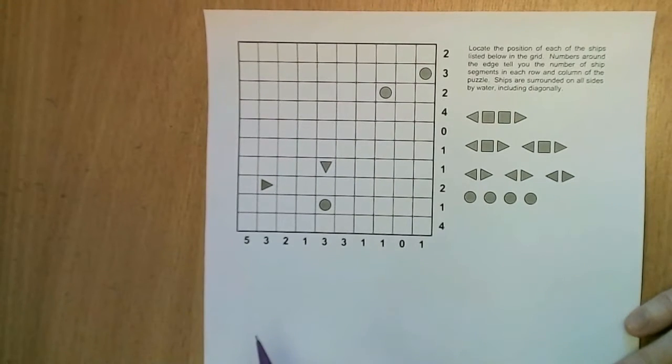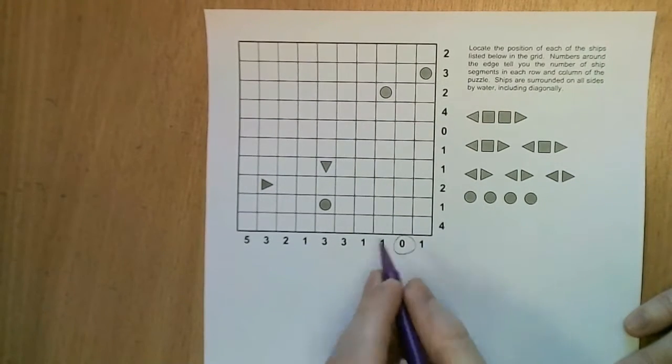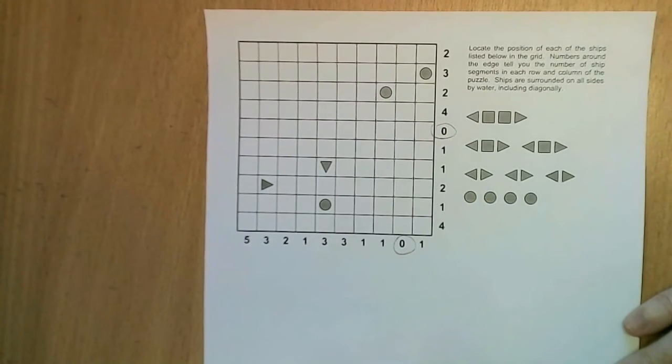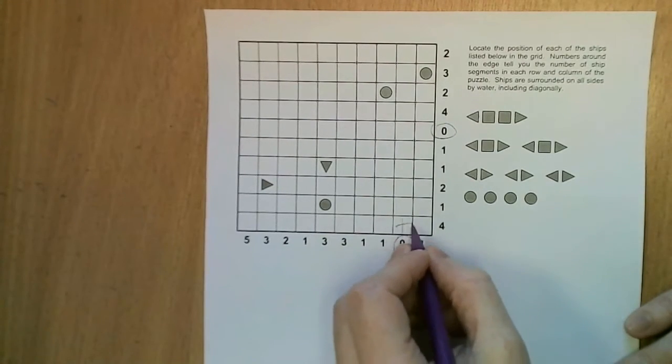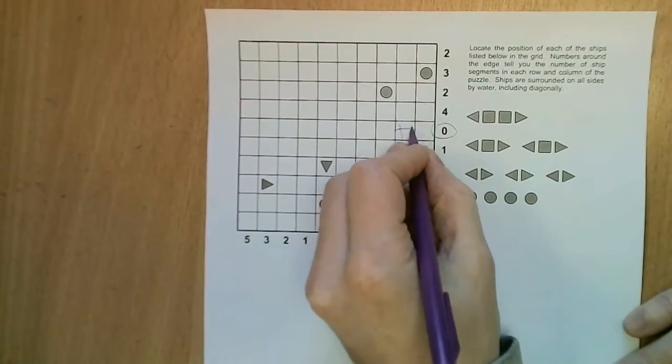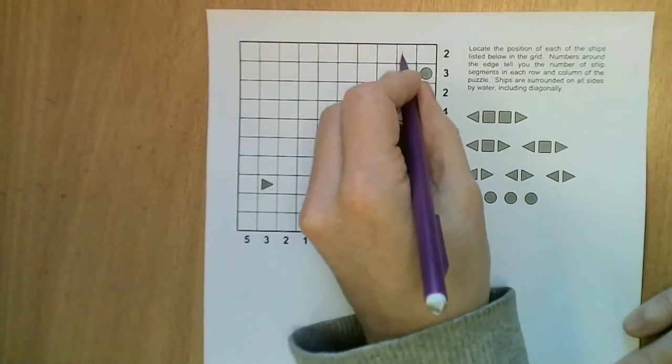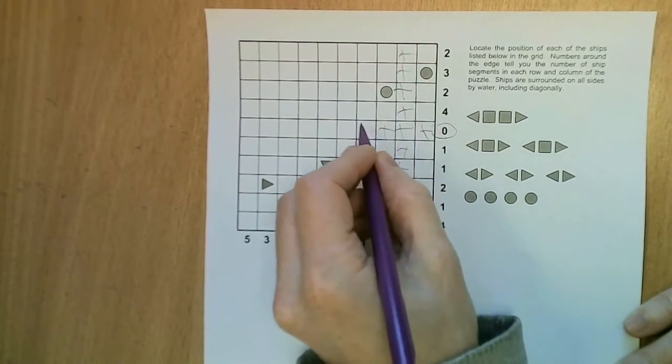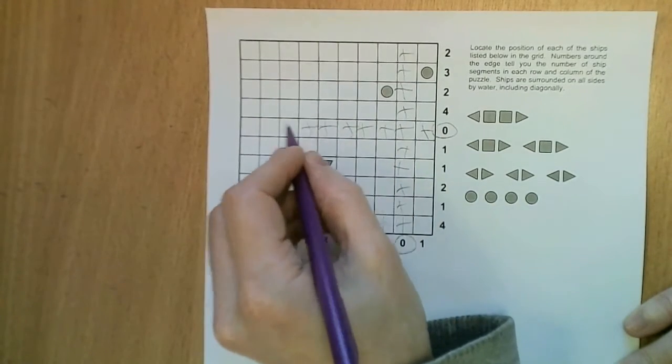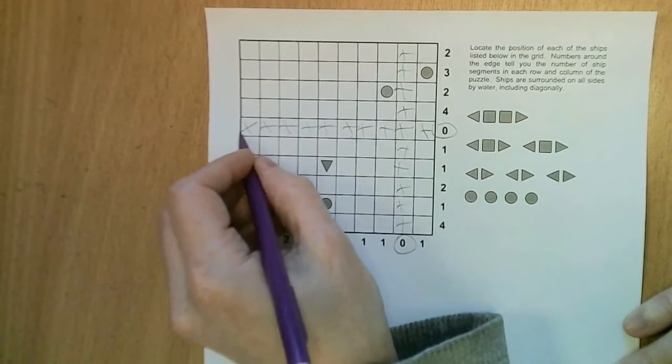So the obvious place to start when solving a battleship is to look for any zero rows and columns like these two here because you know that they contain no ships at all. So I'm just going to mark them in with an X, some people might put a dot or if you're feeling arty you could put wave symbols in to indicate water.